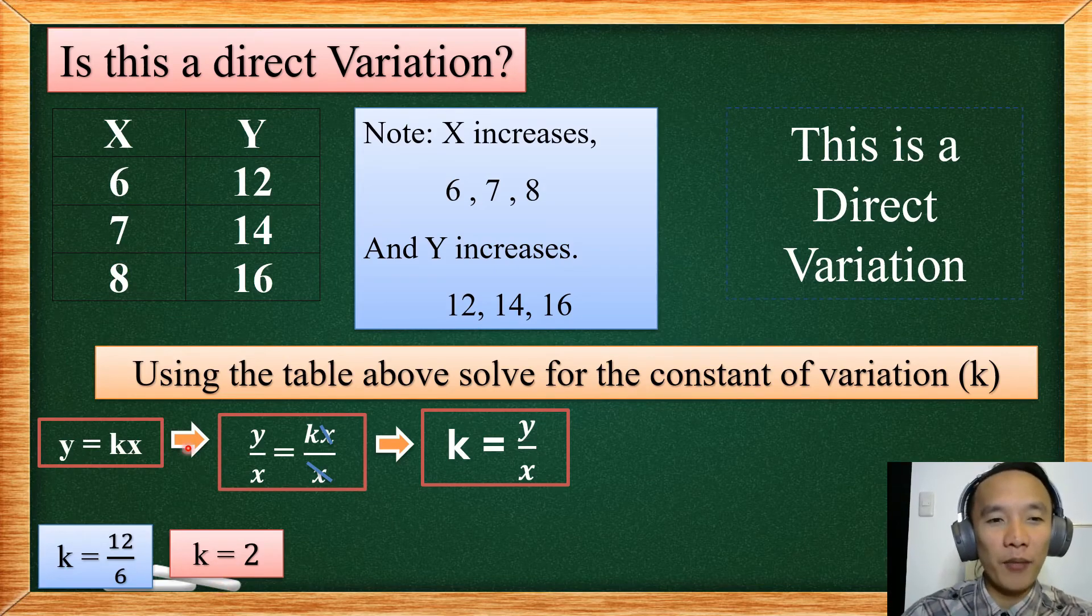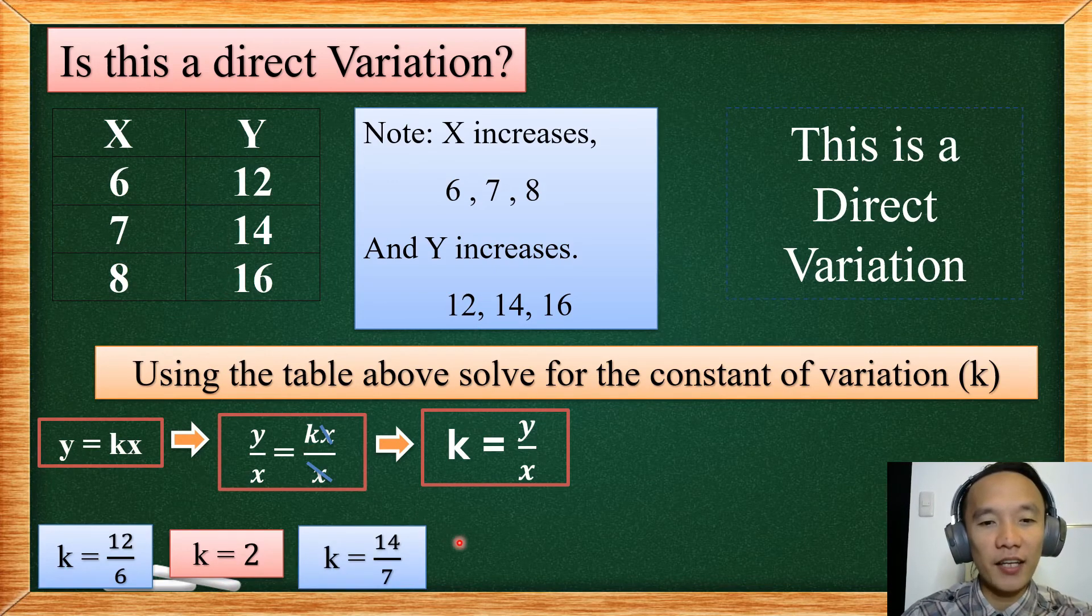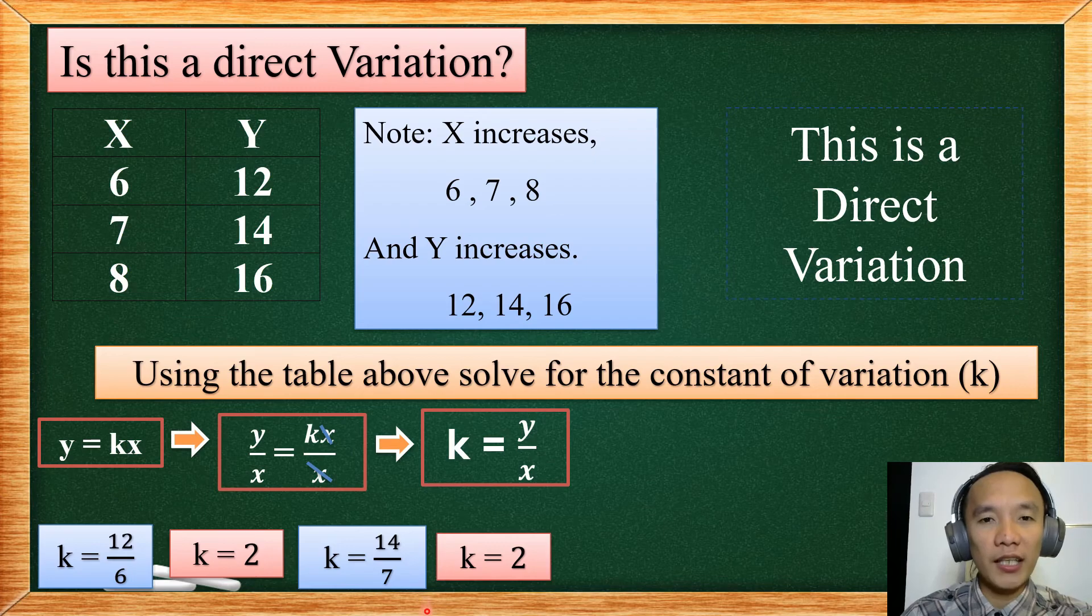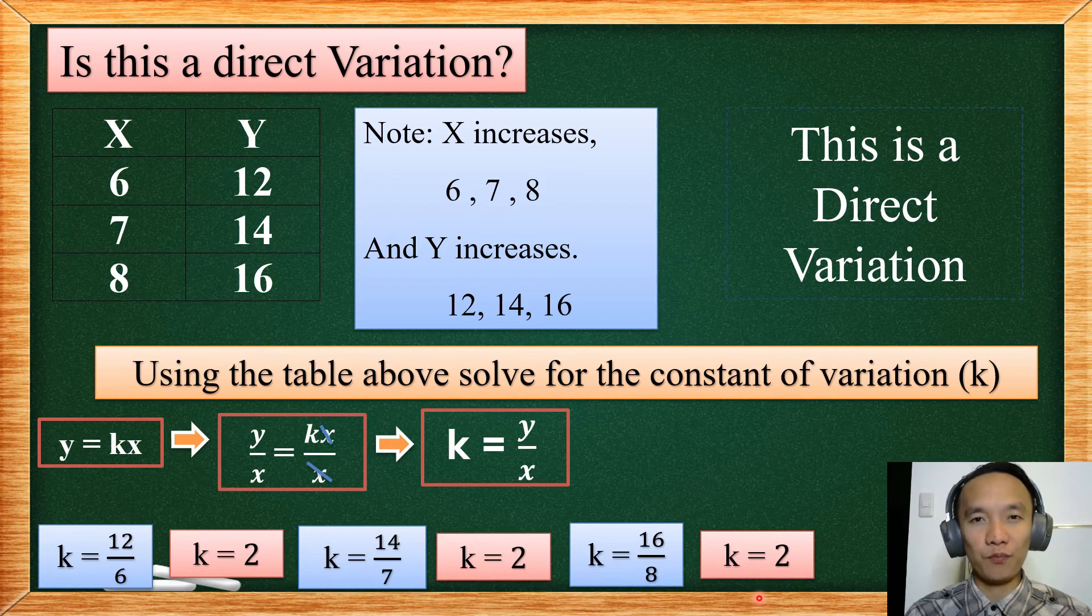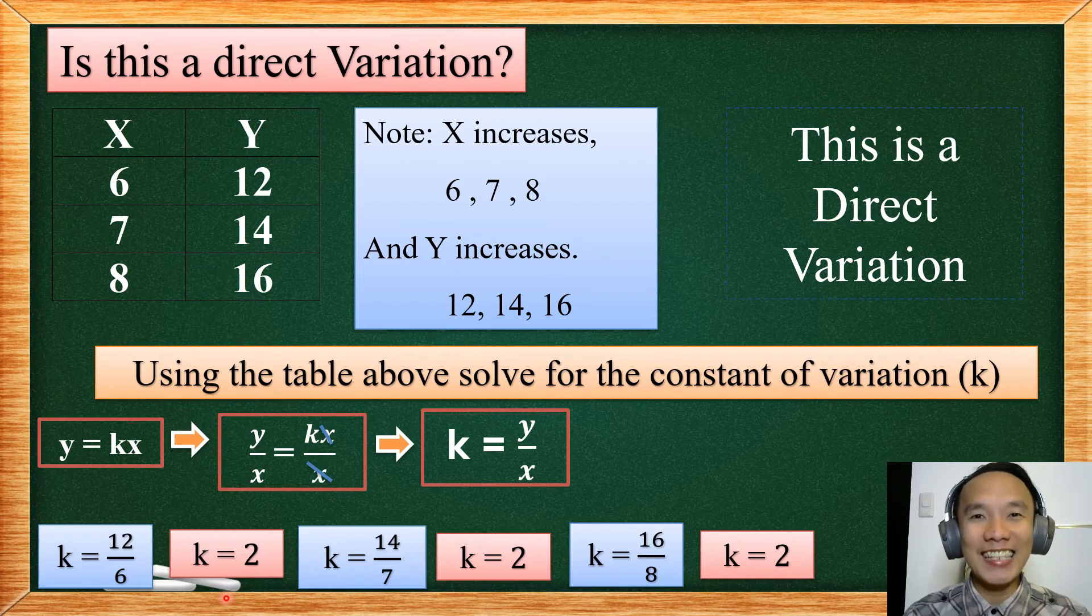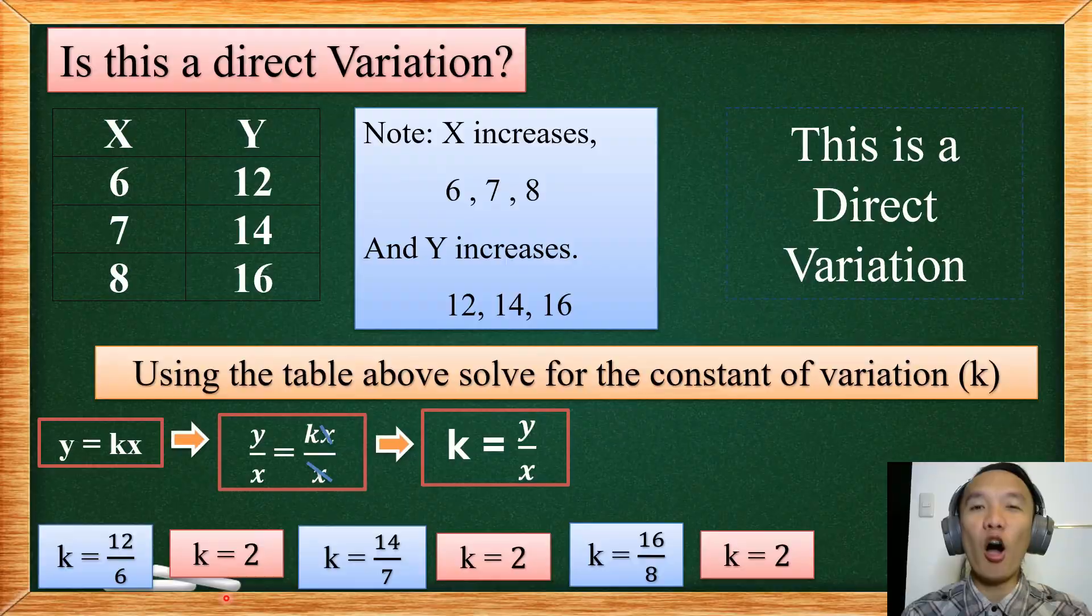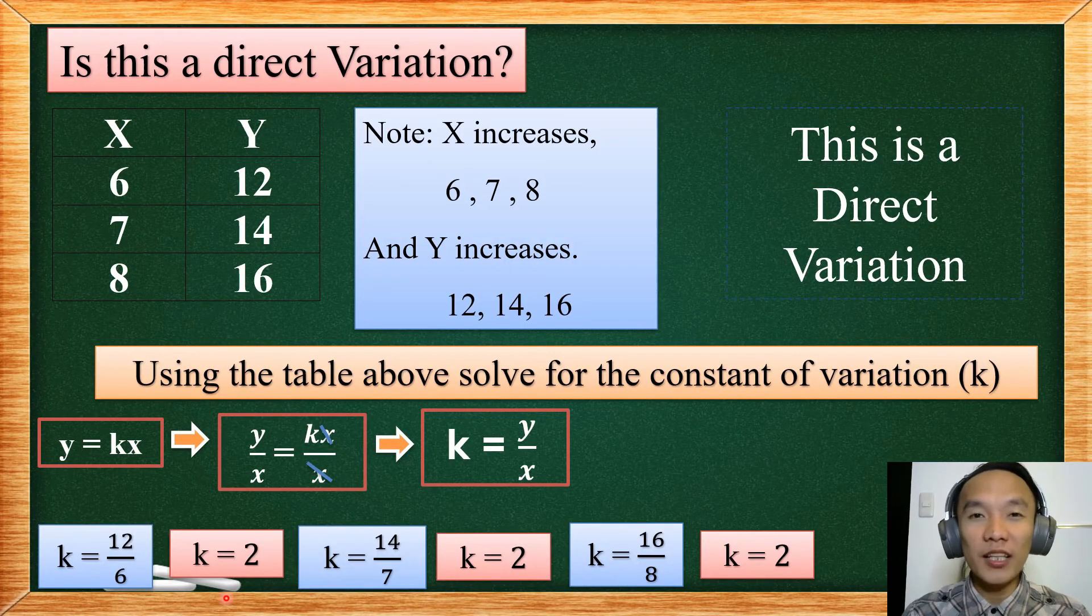So let's try another pair, 14 and 7. So if you divide 14 and 7, the answer is still 2. And let's try the other one, 16 divided by 8, and that is still 2. So as you notice, our constant of variation does not change. They are the same. So that is why they are called constant of variation because it will not change.